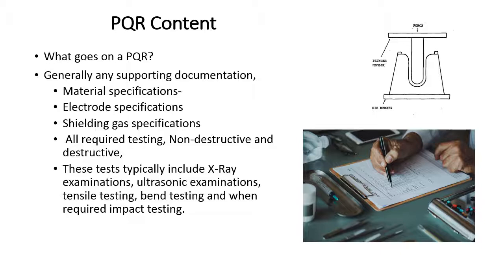PQR content — what goes on a PQR? Generally, any supporting documentation: material specifications, electrode specifications, shielding gas specifications, and all required testing — both non-destructive and destructive. These tests typically include x-ray examinations, ultrasonic, tensile testing, bend testing, and when required, impact testing. All this gets bundled up into a PQR.